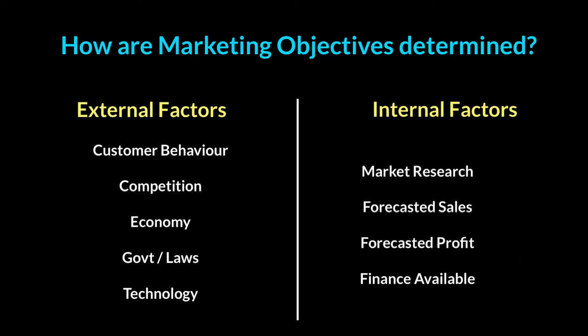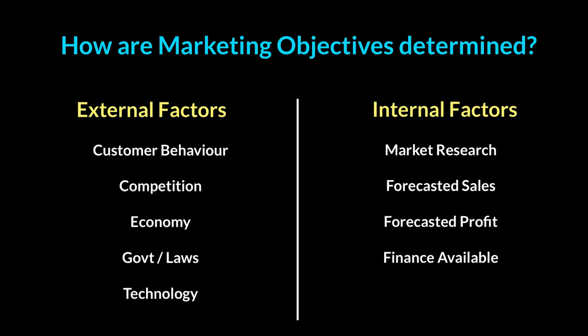Turning to internal factors, the first is market research. Market research is a huge part of the marketing department — we will discuss it in more detail in the next few videos. Market research involves the actions taken by the marketing department to figure out what consumers want, how they want it delivered, where they want it delivered, and what prices they'd be happy to pay. Everything to do with what consumers want and what your competitors are doing comes through the market research process. Two important things that come from market research are forecasted sales and forecasted profit.